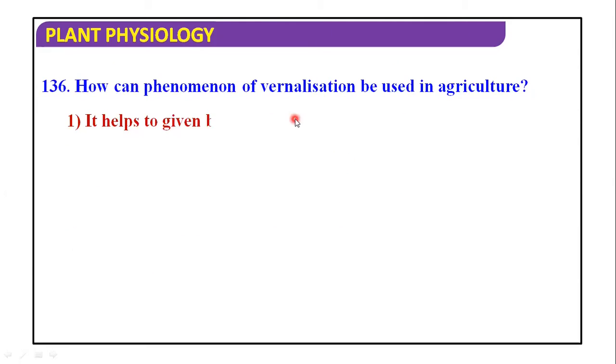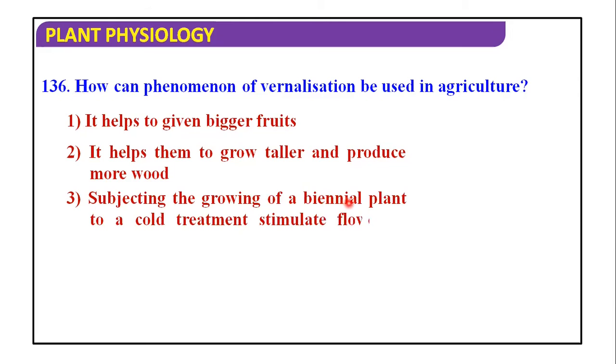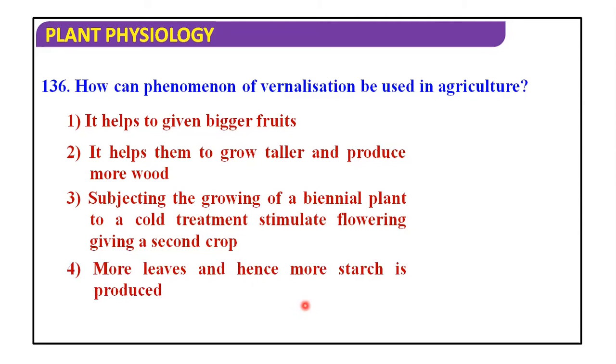How can phenomenon of vernalization be used in agriculture? It helps to give bigger fruits. It helps them to grow taller and produce more roots. Subjecting the growing of biennial plant to a cold treatment stimulates flowering giving second crop. More leaves and more starches are produced. The answer is subjecting the growing of biennial plant to a cold treatment stimulates flowering giving second crop.